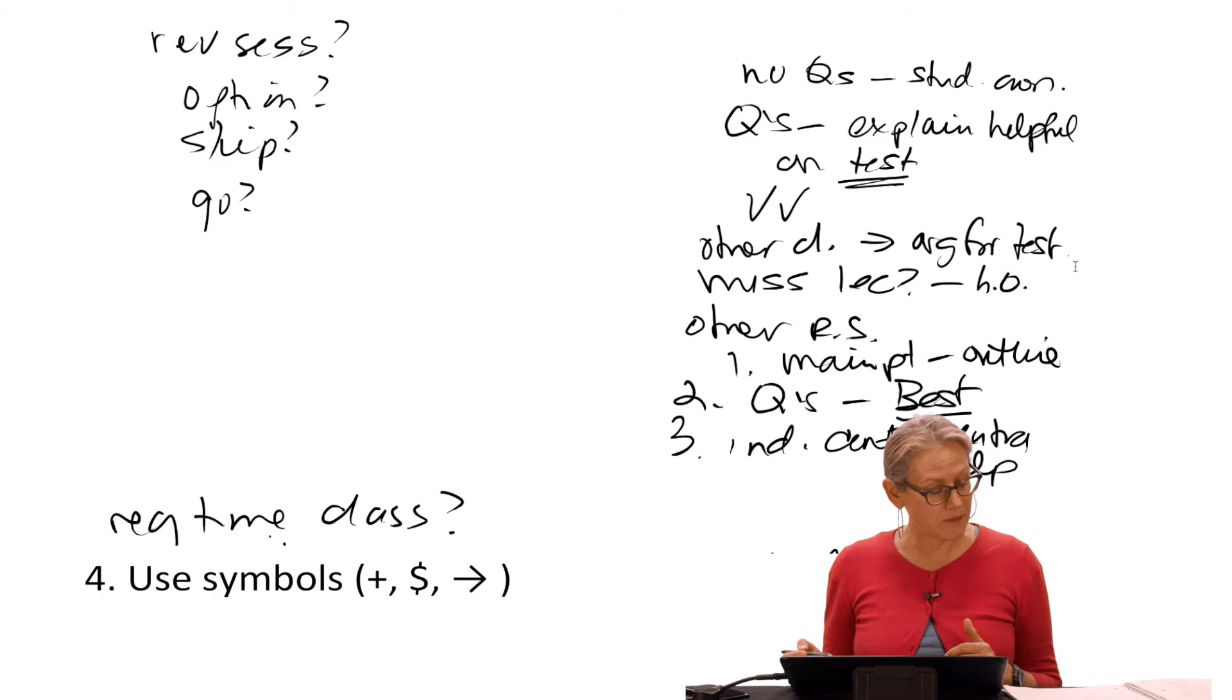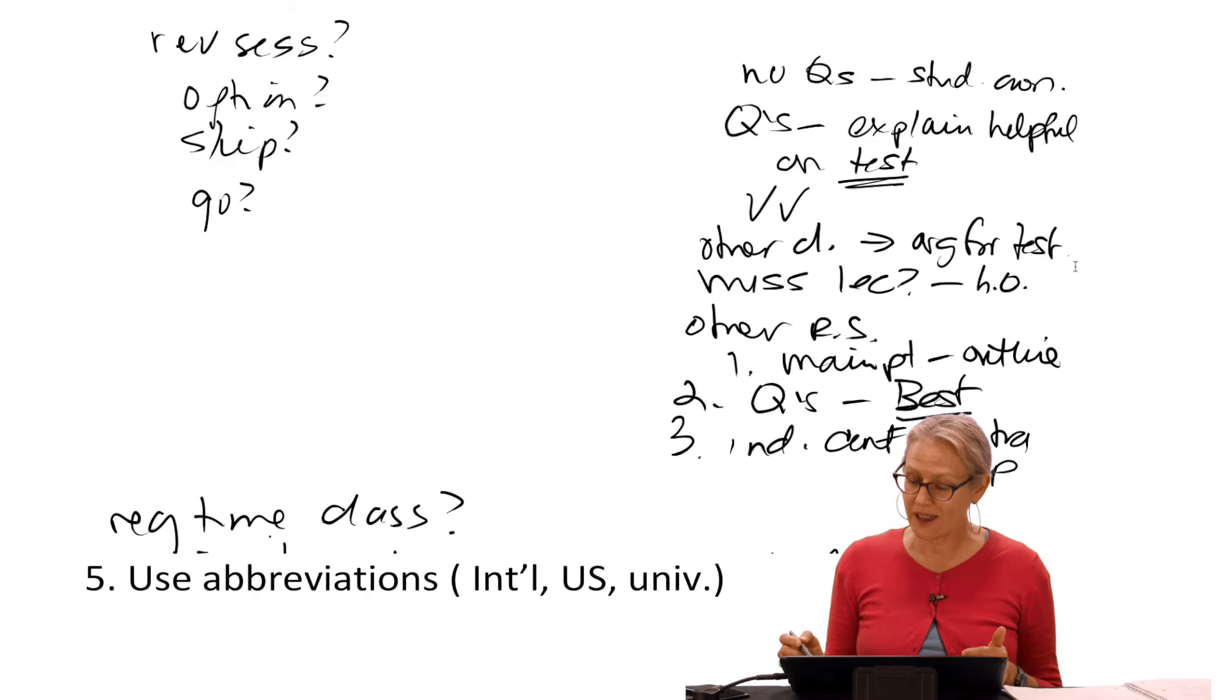And then the next thing is number five, abbreviations. I think I did a good job with that. So for example, I started with REVSESS, which of course means review session. Now, you know, in two years I can look back at this and not remember what REVSESS meant, but you're going to be listening and then answering questions right after. You're going to know what that is. So I made abbreviations that are going to make sense to me in the moment.